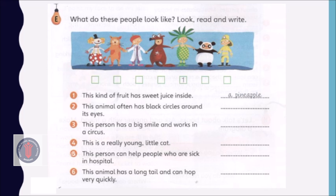Here we go. On your task sheet, please write what costume is being described next to the description. Now, there are six descriptions and seven people, so there is one costume you do not need to write.